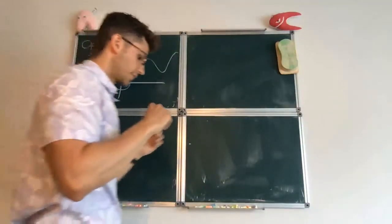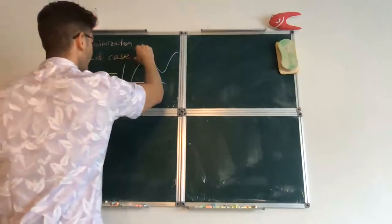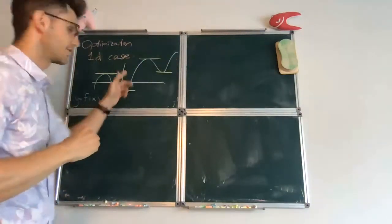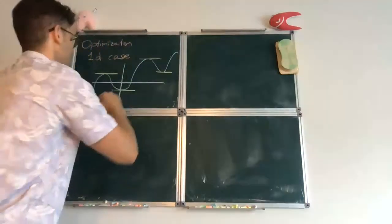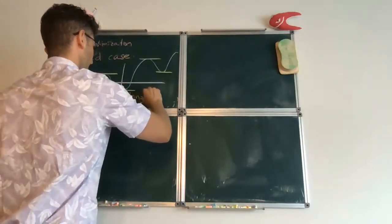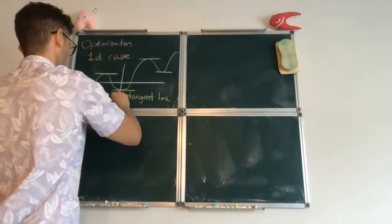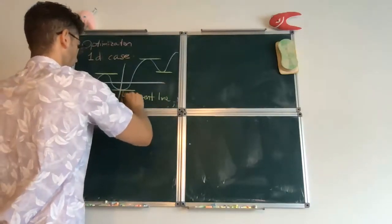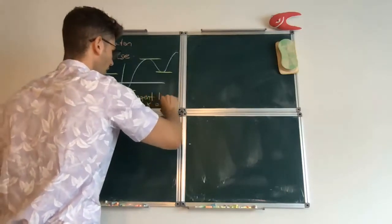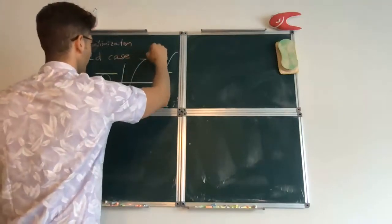what we were interested in was a case where the derivative was zero. So if you think of the derivative as being zero, that means that the slope of the tangent line is zero. In other words, the critical points were characterized by the fact that the tangent line was parallel to the x-axis.